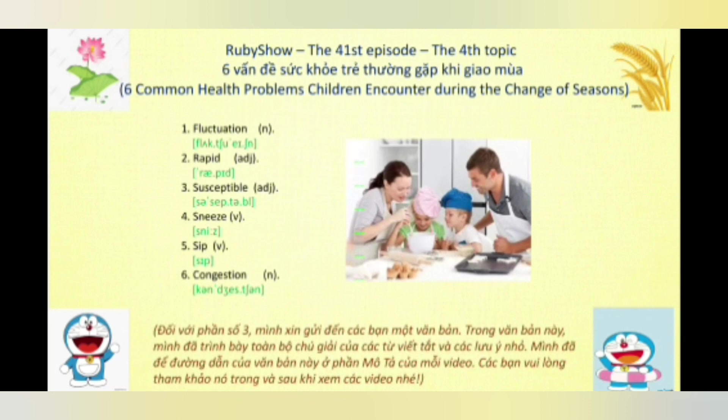Từ số 3, chúng ta có tính từ là 'susceptible,' nhấn âm 2. Tính từ này có 3 nghĩa: nghĩa số 1 là dễ bị hoặc dễ mắc hoặc dễ bị ảnh hưởng hoặc dễ bị tổn thương; nghĩa số 2 là nhạy cảm hoặc dễ xúc cảm hoặc dễ bị ảnh hưởng bởi tình cảm; và nghĩa số 3 là có thể chịu đựng hoặc có thể được.